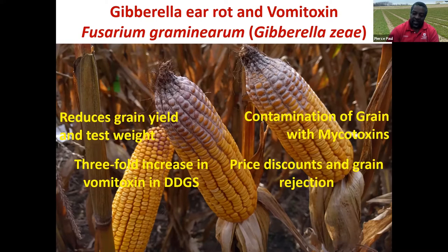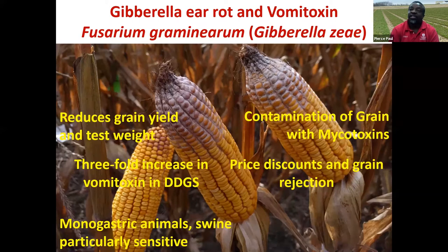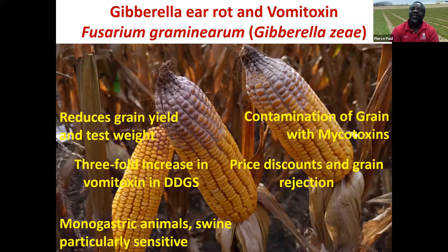If animals consume grain or DDGs with high levels of vomitoxin, monogastric animals — swine in particular — are especially sensitive. It causes vomiting and feed refusal. So obviously it is a concern. In 2020, it was definitely a big issue, and it continues to be a big issue. Today I'll cover what we can do in terms of understanding how weather affects this disease, how we can think about management, and tools that can help with management decisions.